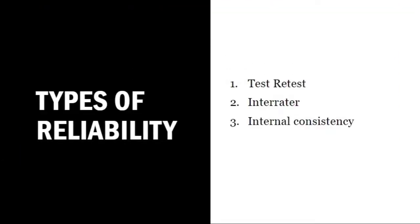Now let's look at the types of reliability. First is test-retest. Second is inter-rater. Third is internal consistency. We will define them one by one.